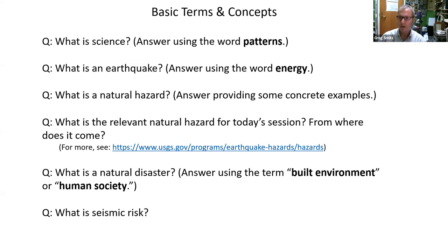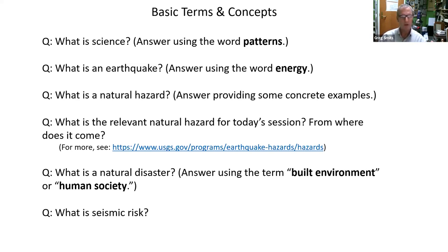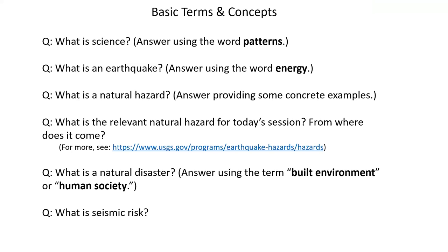But one thing missing is: what is required for that release of energy? When you have the displacement of land, it has to happen rapidly — that's a crucial component. And where does the energy come from? The energy comes from built-up stress over time, such as on a slip fault. It can happen from injection of water into the ground that loosens up the bedrock. But mainly the big thing is the buildup of stress causing a slip.